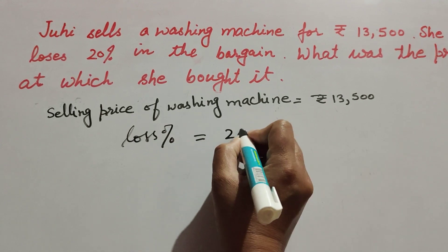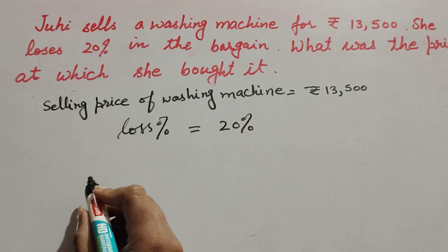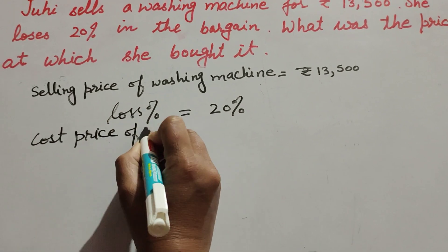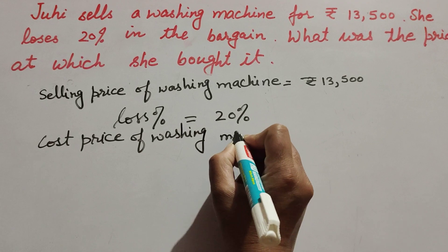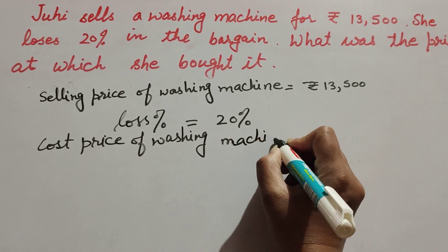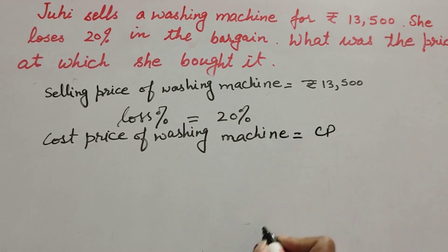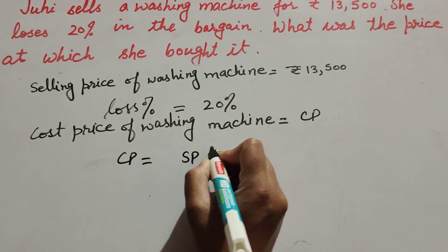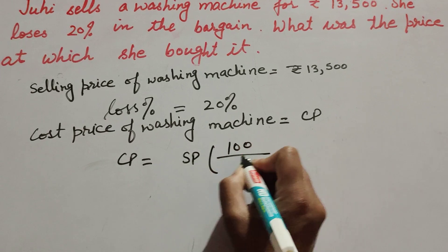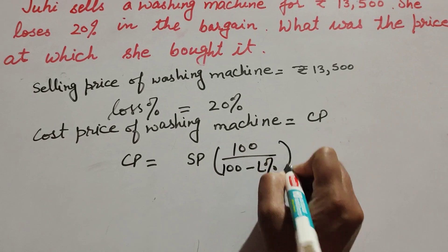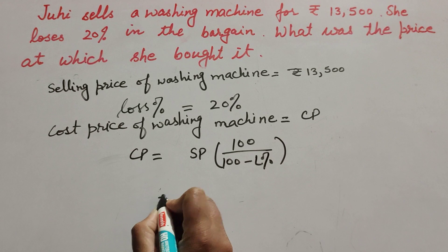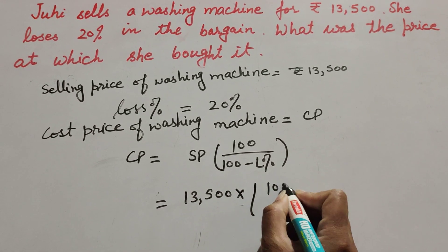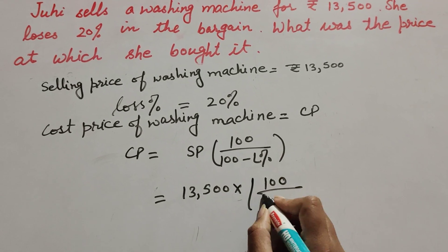The loss percentage is also given — it is equal to 20%. So we find the cost price of the washing machine, which we have to find. We suppose it is CP. We know the formula: CP equals SP multiplied by 100, over 100 minus loss percentage. Here SP is 13,500, so it becomes 13,500 multiplied by 100 over 100 minus 20.